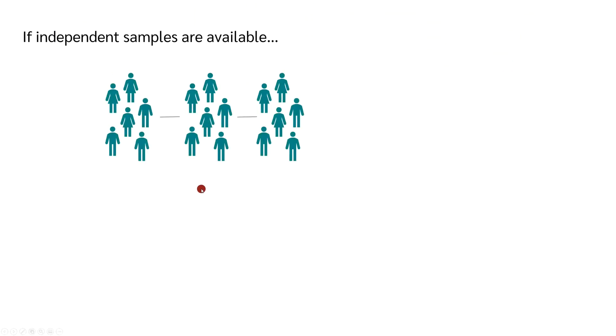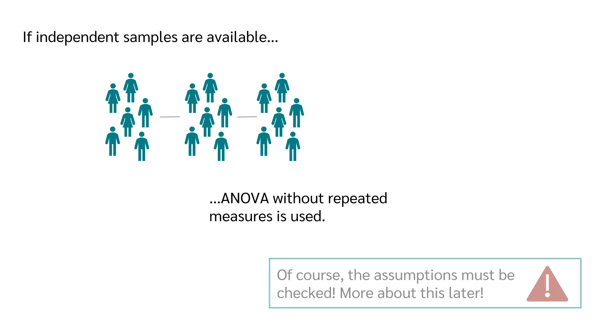When there are three or more independent samples, analysis of variance without repeated measures is used. If you want to know more about it, feel free to watch my video for analysis of variance without repeated measures. But be careful, of course, the assumptions have to be checked first.